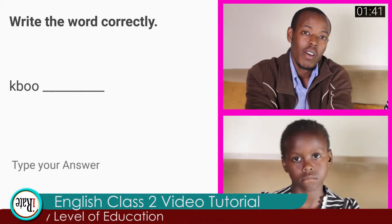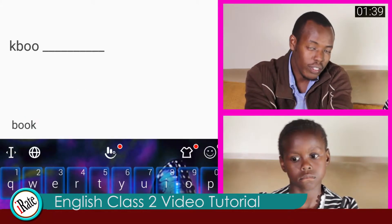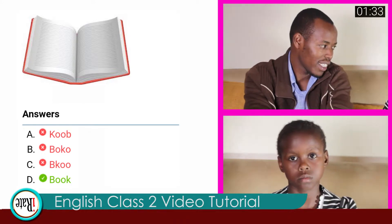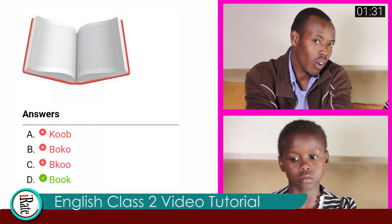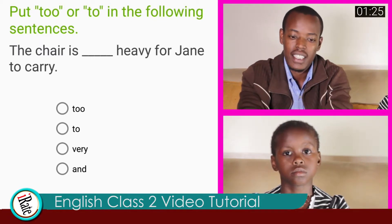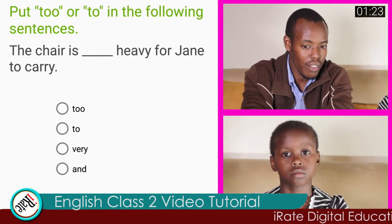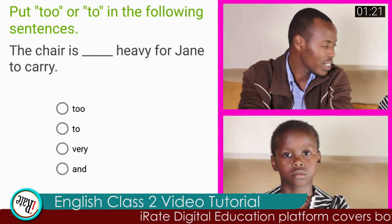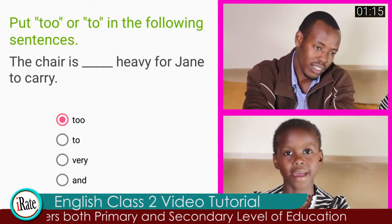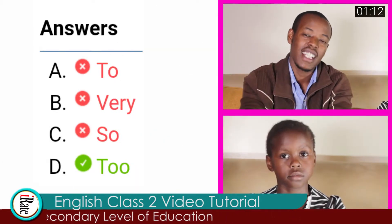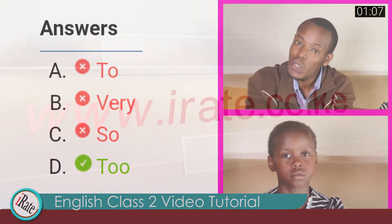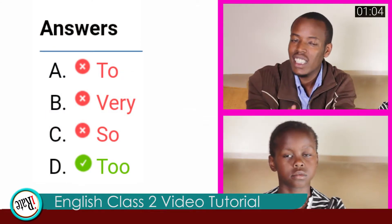Question number seven: write the word correctly — 'kbu'. Book. That is very good. Because you can see even in the image shown there it is a book, and a book is spelled B-O-O-K. Now, put 'to' or 'too' in the following sentence: the chair is dash heavy for Jane to carry. The answer is 'too' with double O. Too heavy, too big, too tall — that is T-O-O.